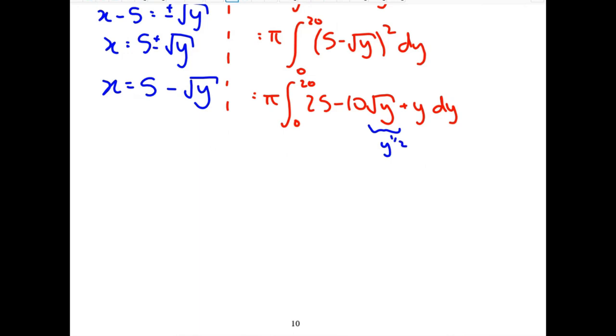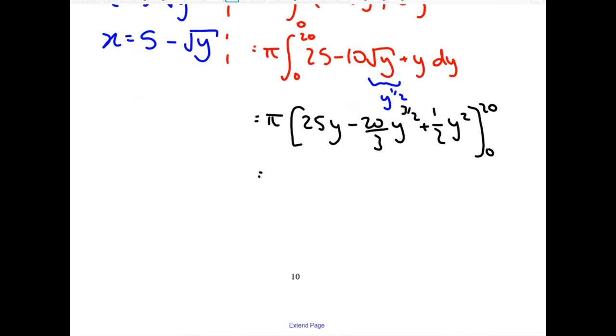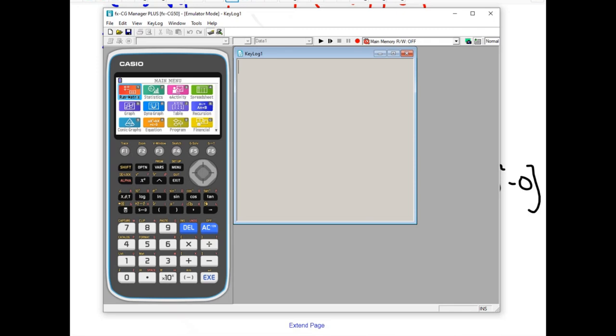Right, root y is y to the half. And then we can do this integration. So 25 goes to 25y. y to the half, you add one to the power and divide by the new power. Give you minus 20 over 3 y to 3 over 2. Integrating y goes to a half y squared. And then it's just subbing the limits in and working out in your calculator. Do show the substitution just to make sure you get all the marks. I'm not going to show the zero substitution because I know it's going to be zero. I'll show the 20 substitution and then work this out in your calculator.